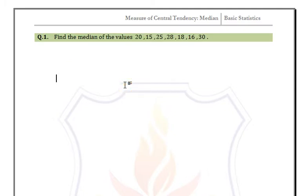Example: Find the median of the values 20, 15, 25, 28, 18, 16, and 30. We have only observations, so first arrange all the data in ascending order.